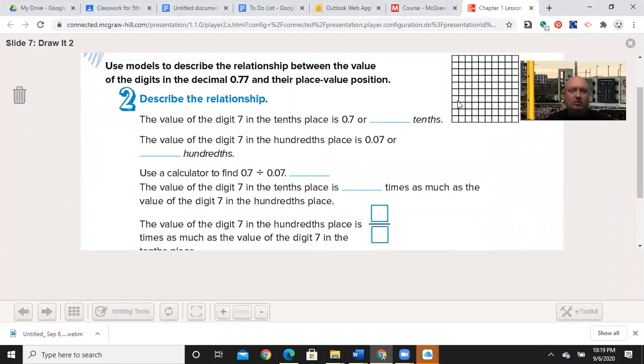The value of the digit seven in the tenths place is 0.7, or seven tenths. That's that first seven. But the value of the seven in the hundredths place is no longer seven tenths, it's seven hundredths. The difference between seven dimes and seven pennies. Use the calculator to find 0.7 divided by 0.07. So how many times does seven go into 70? If you said 10, you have the right answer.